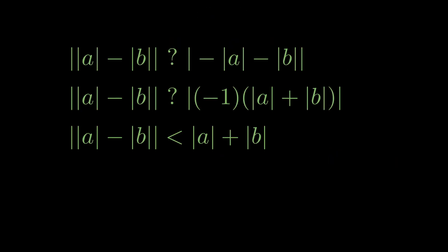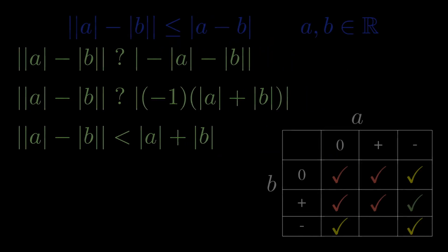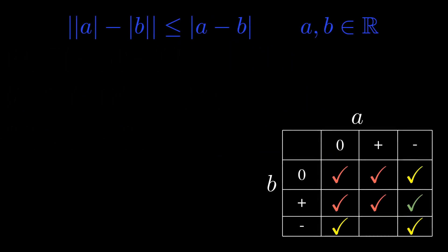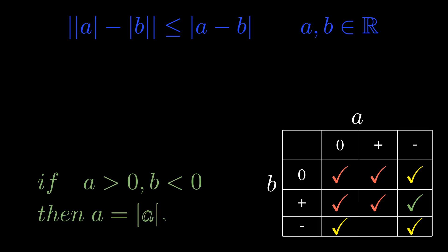This leaves us with the last case, which is when a is going to be greater than zero and b is less than zero. In this case, we can say a is equal to the absolute value of a, and b is just negative of the absolute value of b.